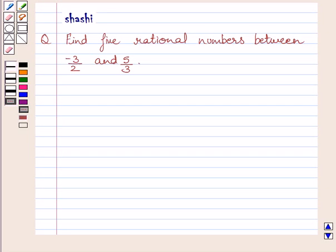Hi and welcome to the session. Let us discuss the following question. Question says, find 5 rational numbers between minus 3 upon 2 and 5 upon 3.